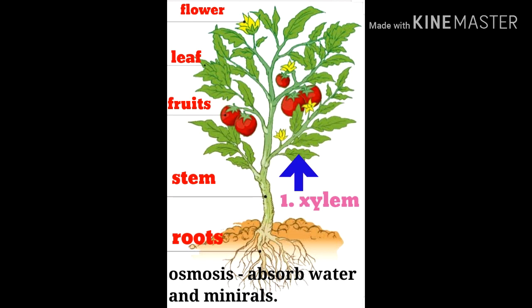Xylem carries water and minerals from the roots, then it flows through the stem going up to the leaves. Number two is phloem. Phloem carries food from the leaf down through the stem and then to the roots. This process of transporting food and water is carried out by the two transport systems known as xylem and phloem.